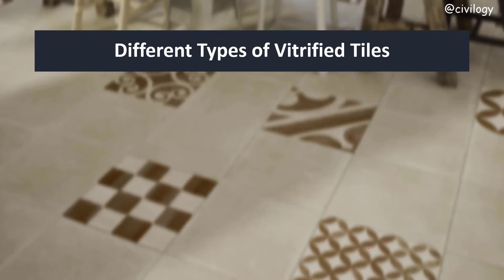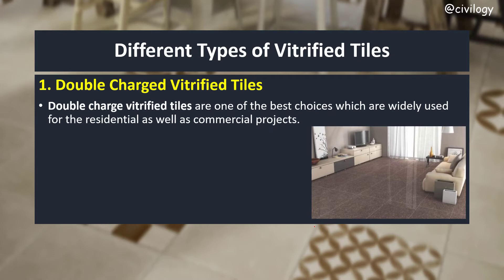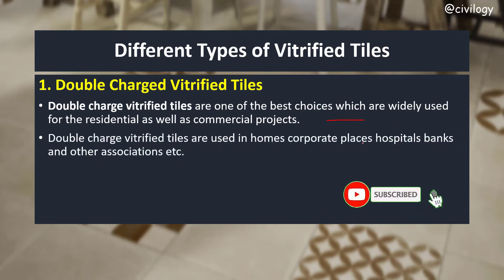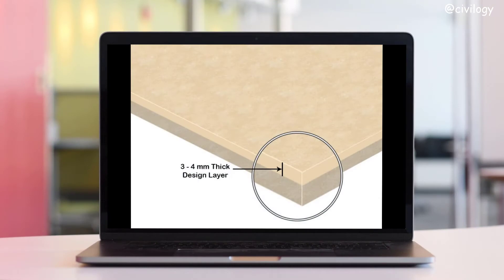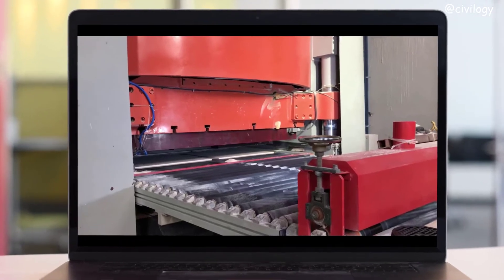Vitrified tiles are mainly classified into three types. First: double charged vitrified tiles. These are one of the best choices, widely used for residential and commercial projects — homes, corporate places, hospitals, banks, and other associations. They are manufactured by infusing two layers of tiles together, making them thicker than conventional tiles, fused with the help of a hydraulic press.